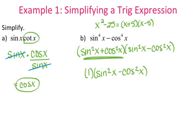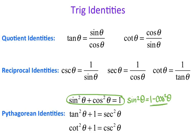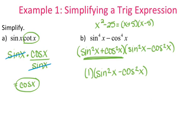Now I want to get it down to one single trig function if I can. I have sine squared of x minus cosine squared of x, so I'll go back to the Pythagorean identity and solve for sine squared: sine squared of theta equals 1 minus cosine squared of theta. I can replace sine squared with 1 minus cosine squared of x, then combine like terms to get 1 minus 2 cosine squared of x.